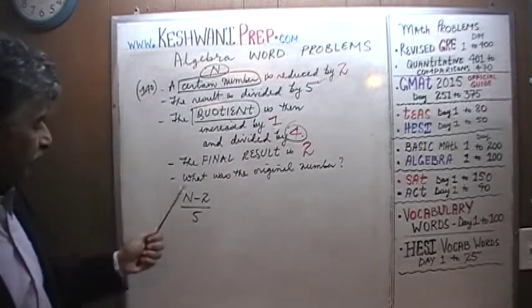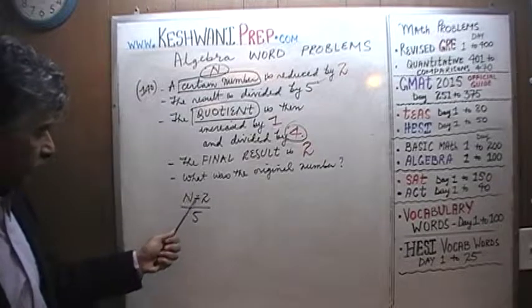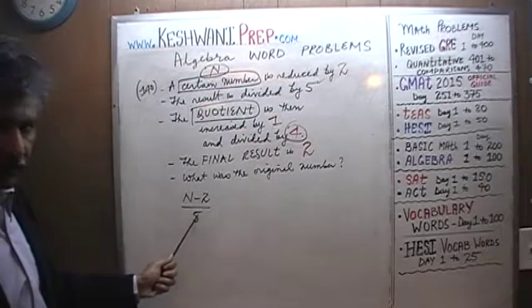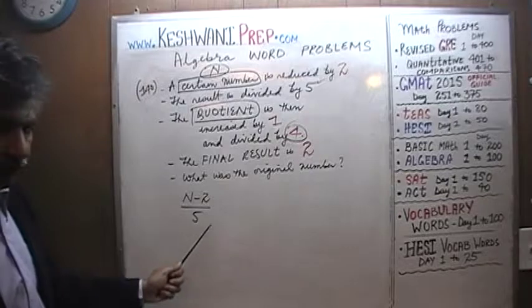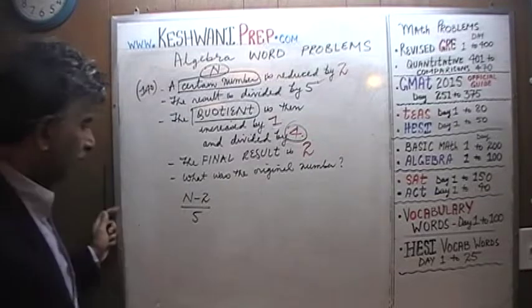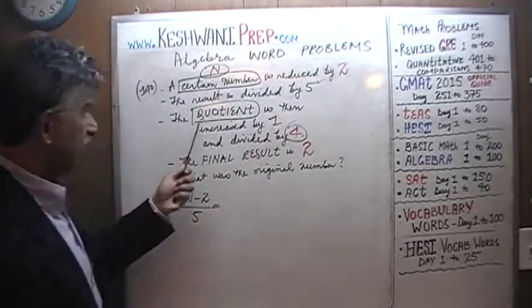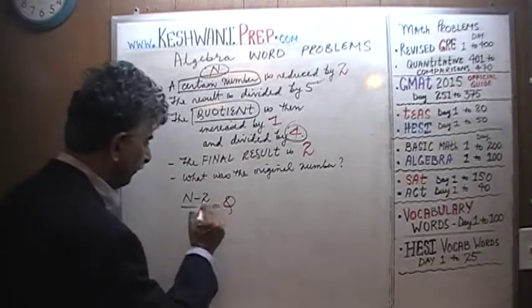The result is divided by 5. And as we talked about in the previous problem and many times before, when you have a quantity and you divide by a number, the result of the division process is what is known as the quotient. Let's call it Q. That's the quotient.